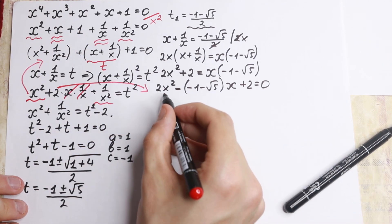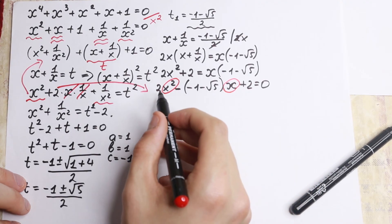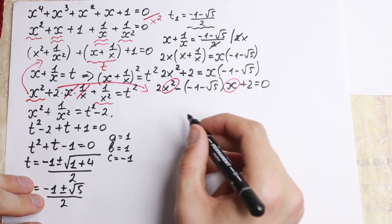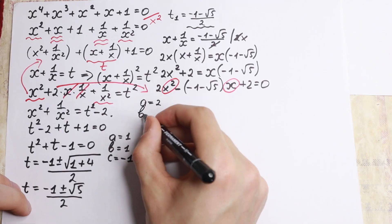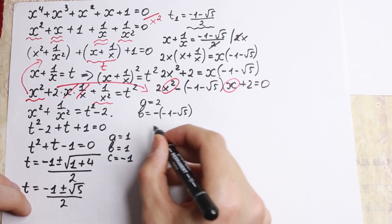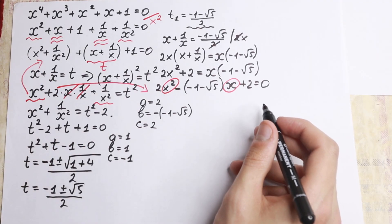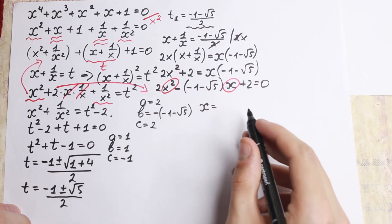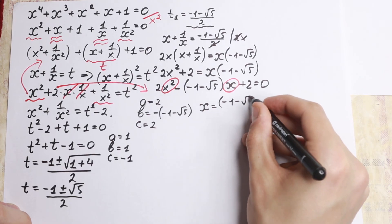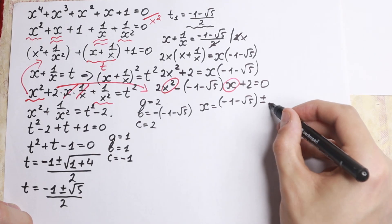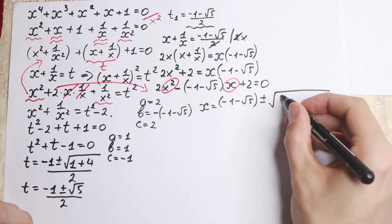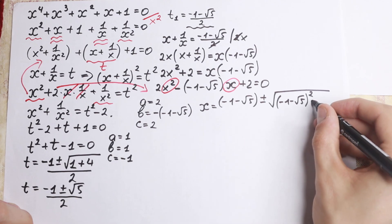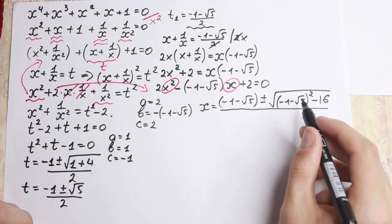This is a quadratic equation in x, with a equals 2, b equals minus(minus 1 minus square root of 5), and c equals 2. The coefficient contains a square root, so we need to work carefully. Applying the quadratic formula: x equals (minus 1 minus square root of 5) plus or minus the square root of (minus 1 minus square root of 5) squared minus 16, all over 4.